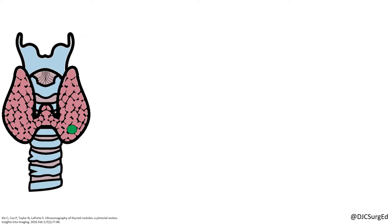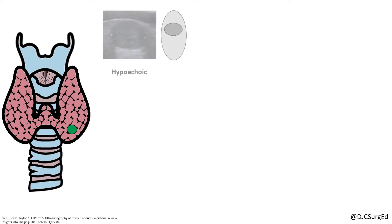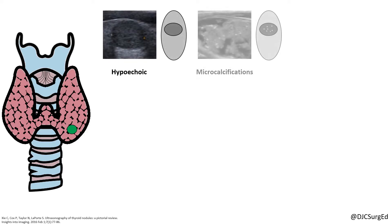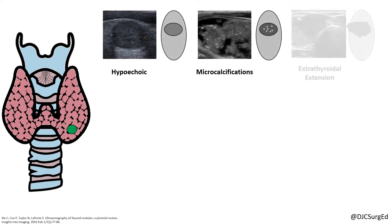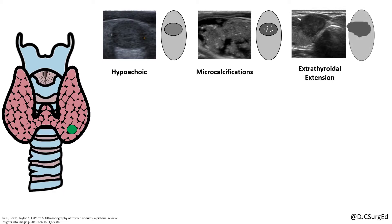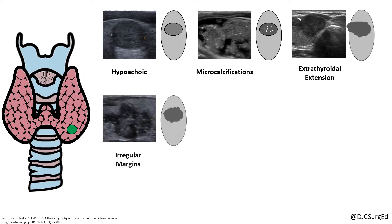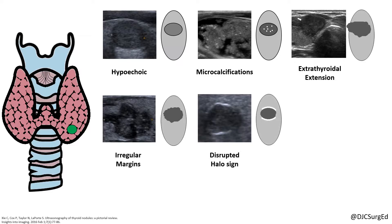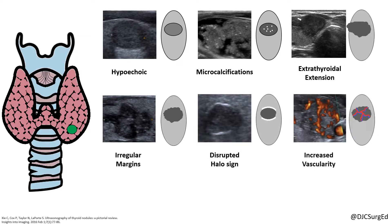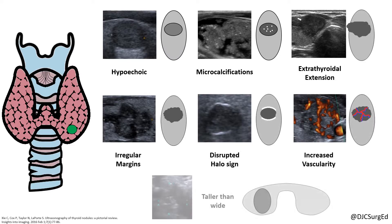Suspicious sonographic features include hypoechoic nodules, microcalcifications, extrathyroidal extension, irregular margins, absence or disrupted halo sign, increased intranodular vascularity, and nodules that are taller than they are wide.